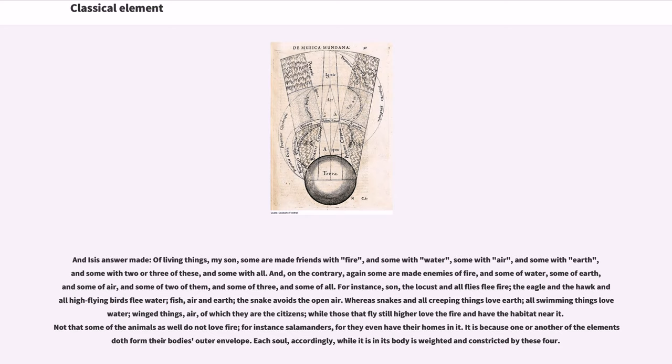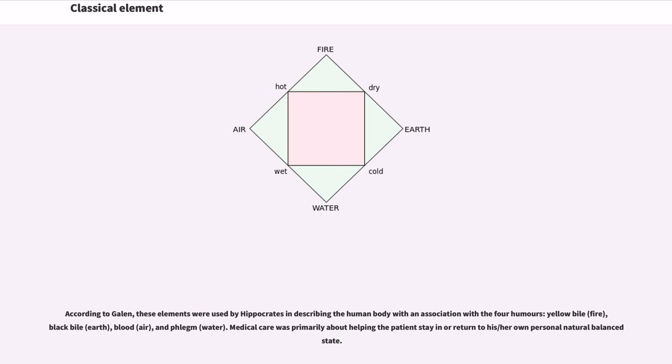Each soul, accordingly, while it is in its body is weighted and constricted by these four. According to Galen, these elements were used by Hippocrates in describing the human body with an association with the four humors: yellow bile, fire, black bile, earth, blood, air, and phlegm, water. Medical care was primarily about helping the patient stay in or return to his or her own personal natural balanced state.